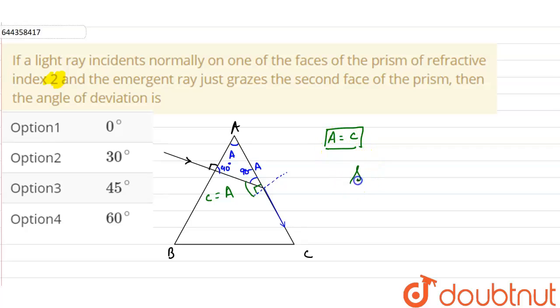Okay, now the critical angle is related with the refractive index as sin(C) = refractive index of the rarer medium upon refractive index of the denser medium. Now since it is going from the prism to the air, the refractive index of the rarer medium will be equals to 1, so it will be refractive index of the prism.